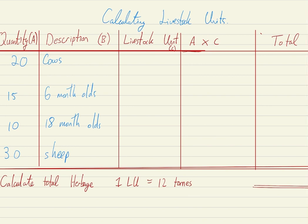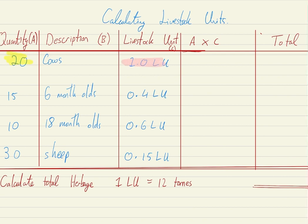I'm going to directly multiply my quantity by the livestock unit. For a cow that's one livestock unit, for my six-month-old that's 0.4 livestock units, for my 18-month-olds that's 0.6 livestock units, and for my sheep 0.15 livestock units. So I multiply my number of cattle by the matching livestock unit: 20 multiplied by 1 gives me 20 livestock units.